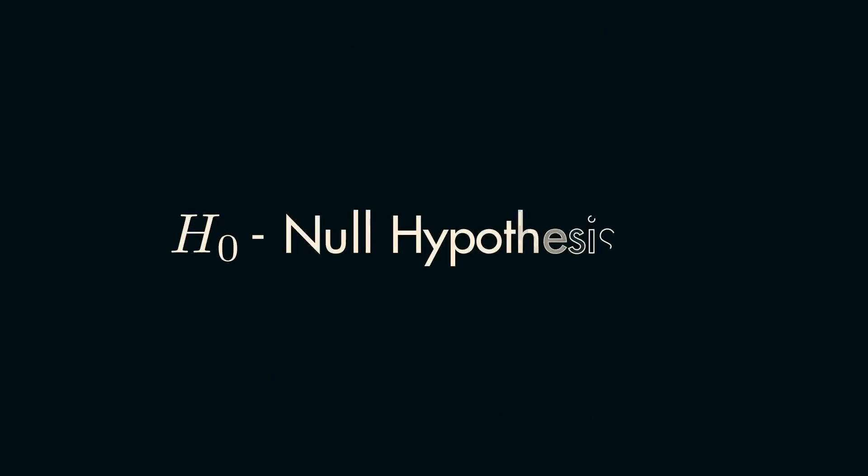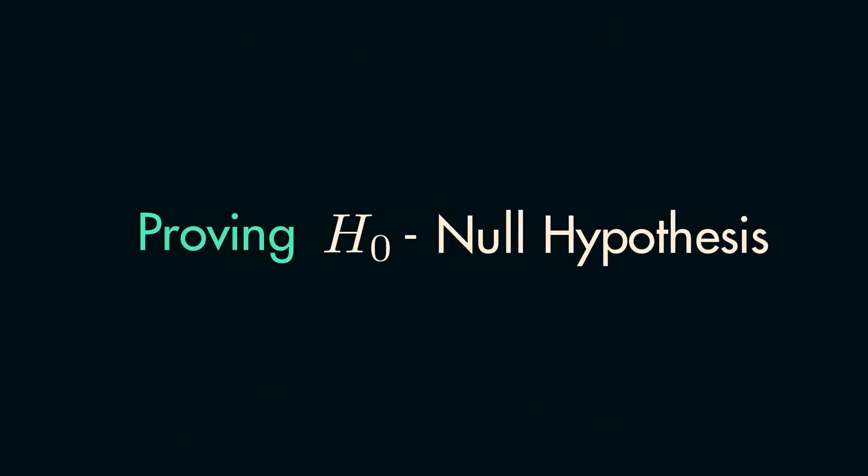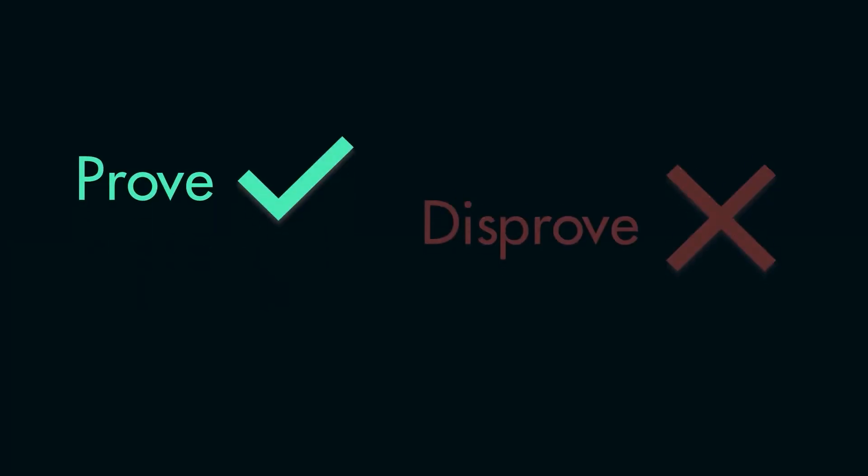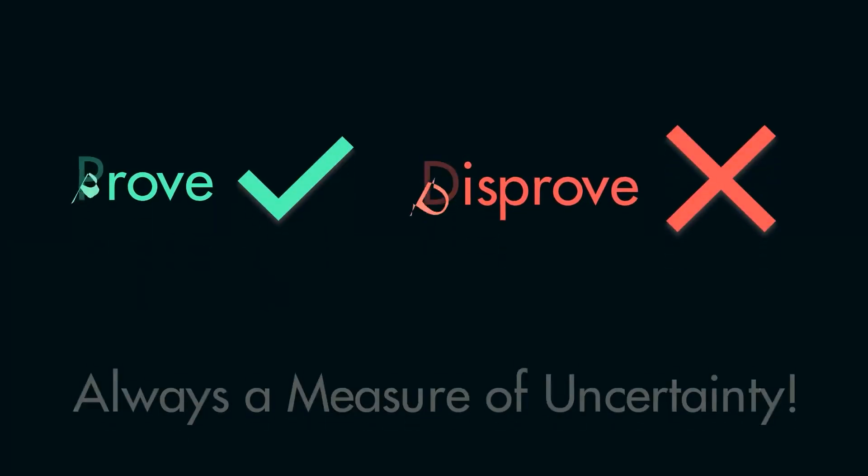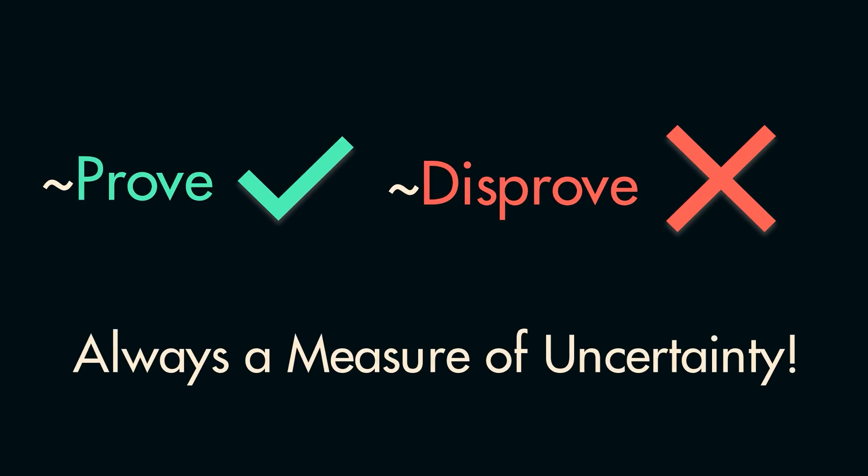Statistical hypothesis testing usually takes the approach of proving or disproving the null hypothesis, rather than directly working with the alternative hypothesis. It is very important to notice that while I use the words prove and disprove out of convenience, there is always a measure of uncertainty with statistical conclusions, so you can never be certain your results are true, only quite certain.